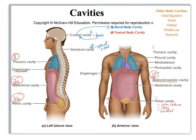Some of your other intestines will dip down in there as well. In the abdominal cavity you're looking at liver, gallbladder, kidneys, and the bulk of your intestines — all of that good stuff.